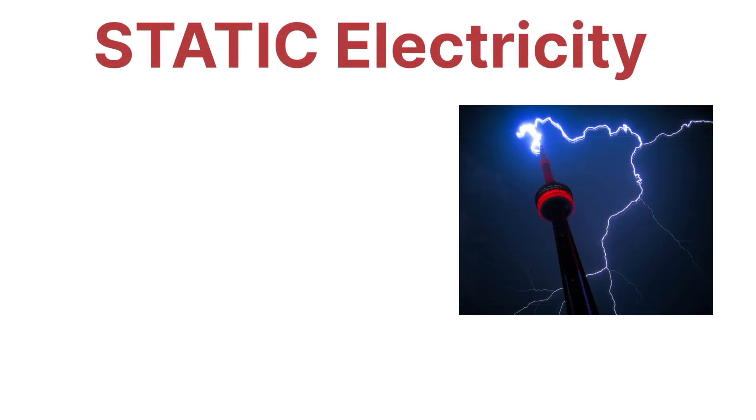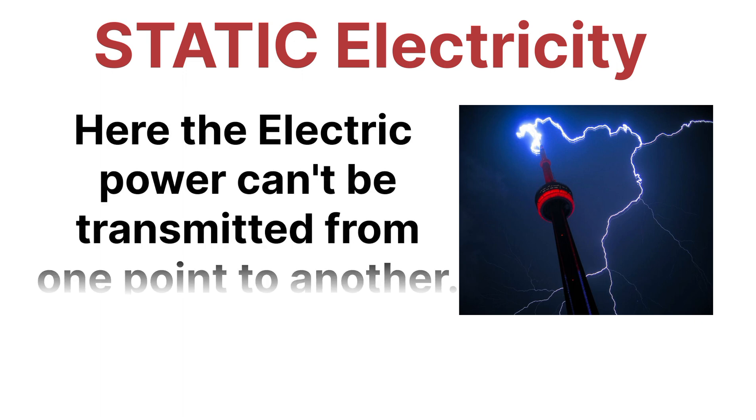Static electricity is that type of electricity by which we cannot transmit electrical power from one point to another point with the help of any type of conductor. That's why we call it static electricity, because the power can't be transmitted from one point to another point in this type of electricity.